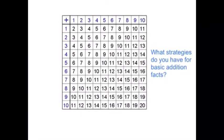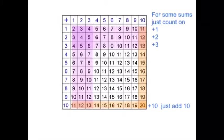In this video, we're going to look at the strategies for basic addition facts. For the easy sums like 1 plus 1, plus 2, and plus 3, we just count on: 6 plus 1 is 7, 7 plus 2 is 8, 9, 8 plus 3 is 9, 10, 11.